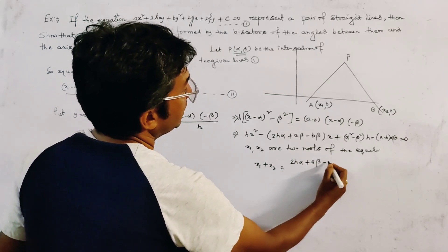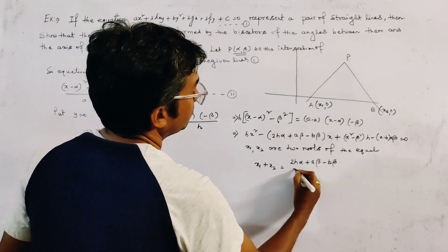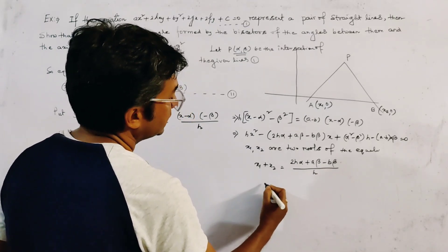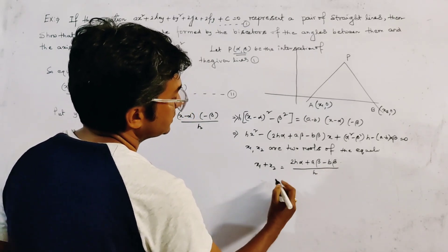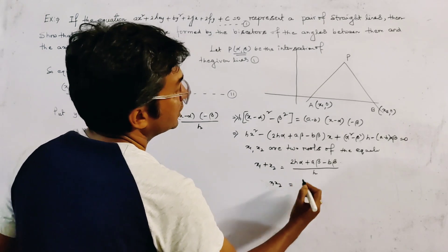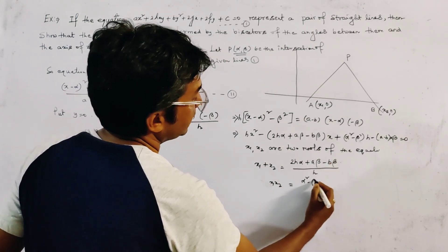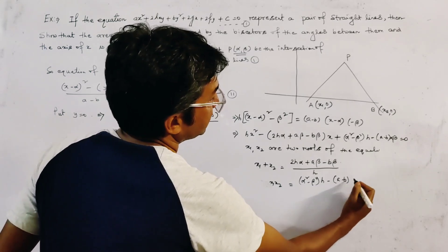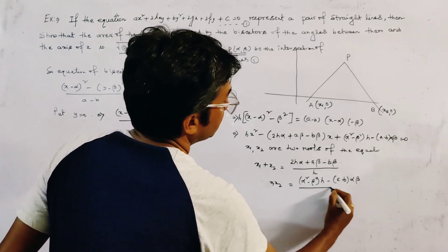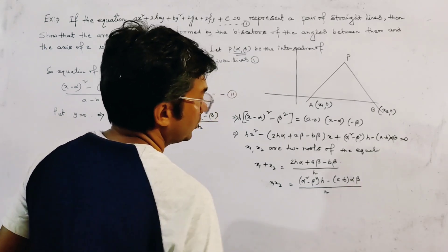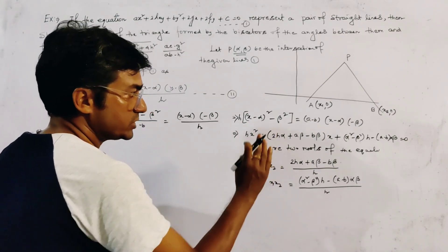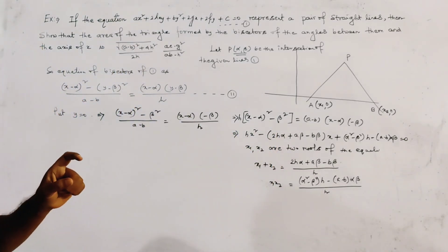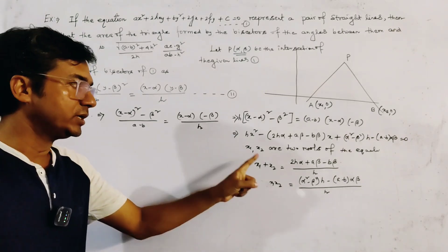And x₁·x₂ is given by (α² − β²)h − (a − b)·α·β / h. These two results — the sum and product of roots — are obtained by applying Vieta's formulas to the quadratic equation.